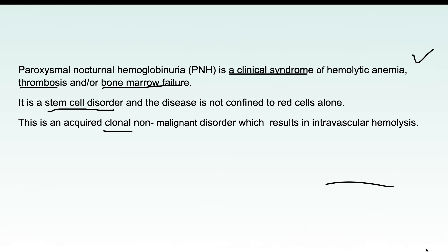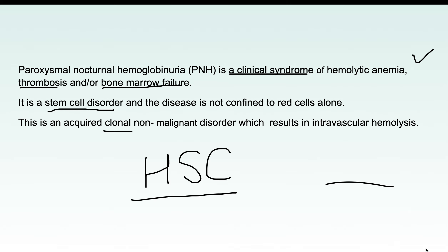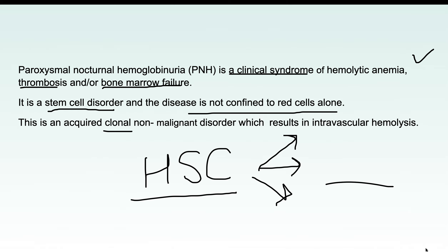PNH is a clonal disorder. The affected stem cell is the hematopoietic stem cell. Because the hematopoietic stem cell is affected, and it gives rise to red blood cells, WBCs, and platelets, PNH is not confined only to red blood cells. It is an acquired clonal disorder leading to a clinical syndrome that includes hemolytic anemia, thrombosis, and bone marrow failure.